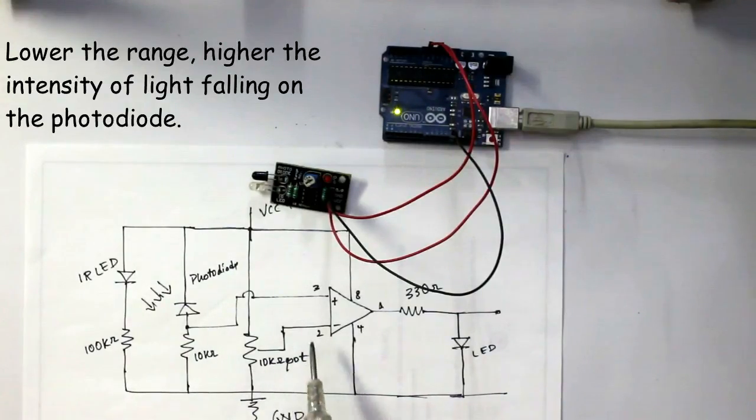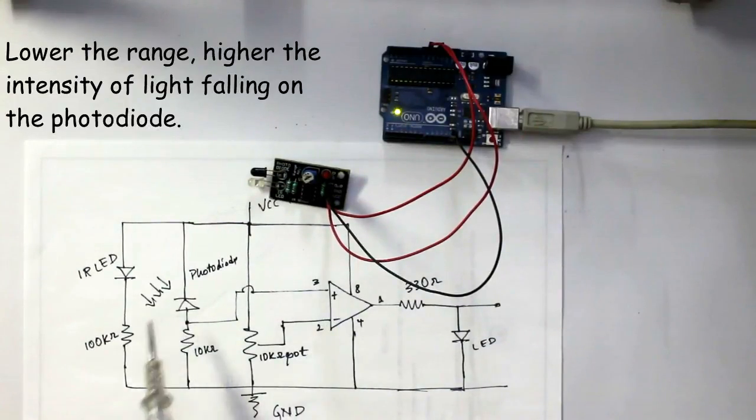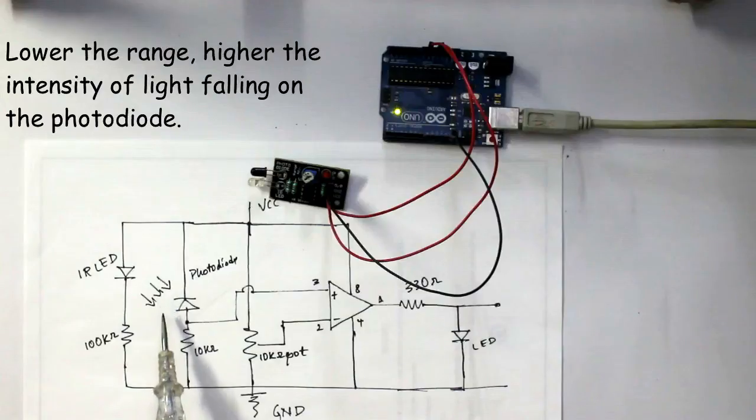If this is kept very high, then high voltage is required at pin number 3, and therefore high intensity is also required. And this can happen only when the range is small.